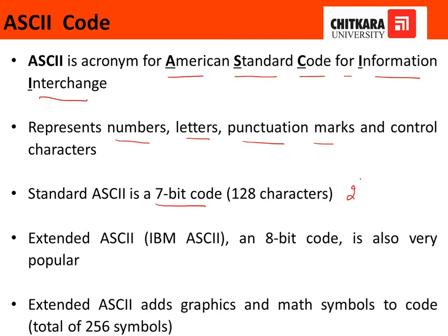The thing to keep in mind is it is a 7-bit code. If it is 7-bit code, 2 raised to the power 7 is 128, so it forms 128 characters. Another type of ASCII code is the extended ASCII code, that is 8-bit. If it is 8-bit, 2 raised to the power 8, which means it forms 256 characters. Extended ASCII adds graphics and math symbols to core total 256 symbols. This is the main difference: simple ASCII is 7-bit and extended ASCII is 8-bit.